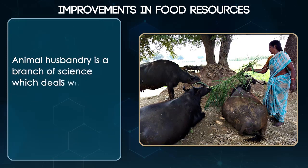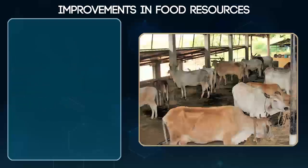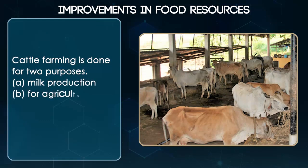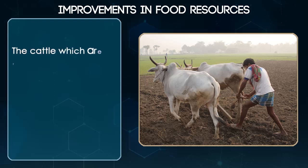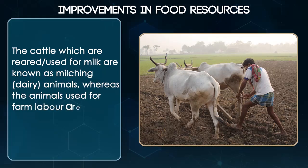Animal husbandry is a branch of science which deals with scientific management of livestock. Cattle farming is done for two purposes: A. Milk production and B. Agricultural labor work. The cattle raised for milk are known as milching animals, whereas the animals used for farm labor are called drought animals.